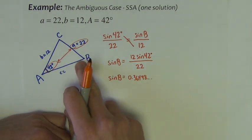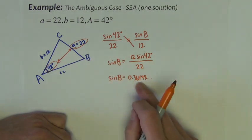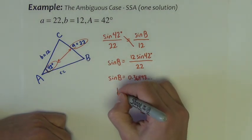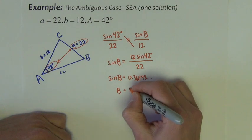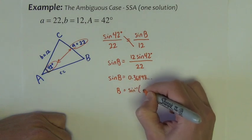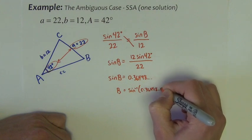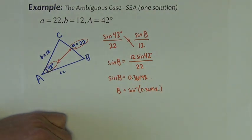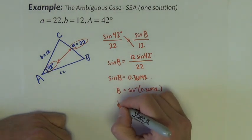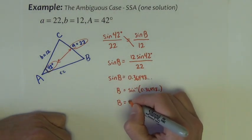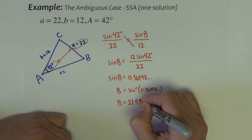Now that's not the measure of angle B, that's the sine of angle B, so if we want to get B by itself, we have to do sine inverse of this decimal. Now if you kept it on the calculator, you can just use the answer feature of the calculator so we're not rounding before we get to the final answer. 21.4 degrees.